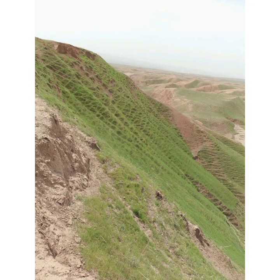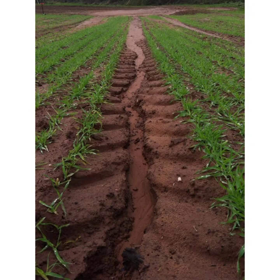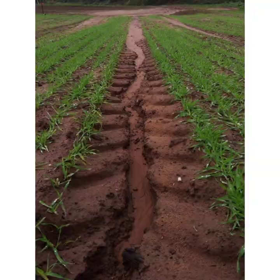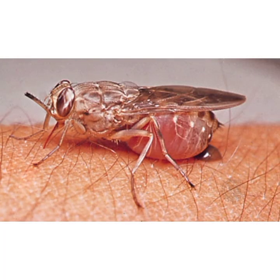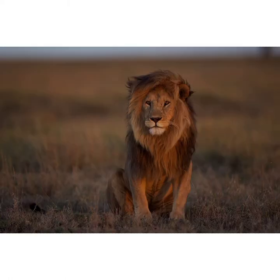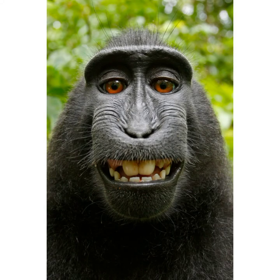Steep slopes in rift valley areas hinder mechanization on farms. The escarpments are associated with soil erosion which leads to loss of soil fertility, e.g. in Mundi Wujo. Rift valley areas are infested with pests, e.g. tsetse flies which spread nagana in cattle. Some areas of the rift valley have got dangerous wild animals which scare away human settlements, e.g. lions and monkeys within Queen Elizabeth National Park.